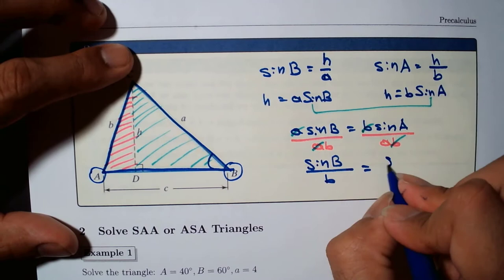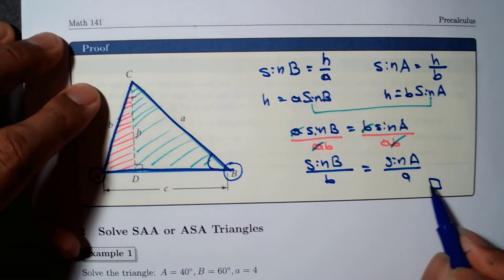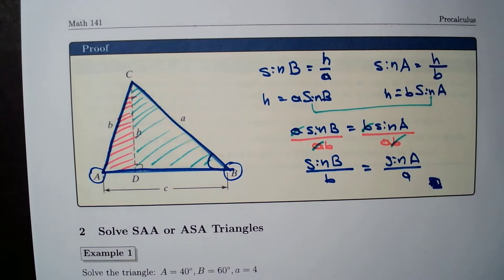In this case the result came out in reverse order — sine B over b equals sine A over a — but since A equals B and B equals A, it's the same; there's no difference. And that's where the Law of Sines is coming from. Okay, let's do a couple of examples.